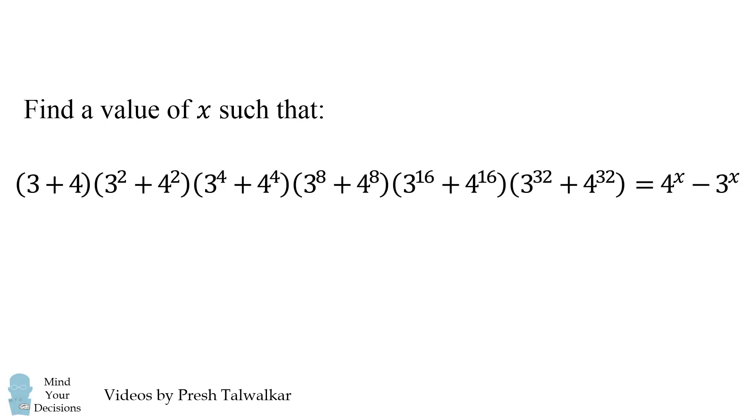The terms are the following: We have the quantity 3 plus 4 times the quantity 3 squared plus 4 squared times the quantity 3 to the power 4 plus 4 to the power 4 times the quantity 3 to the power of 8 plus 4 to the power of 8 times the quantity 3 to the power of 16 plus 4 to the power of 16 times the quantity 3 to the power of 32 plus 4 to the power of 32.